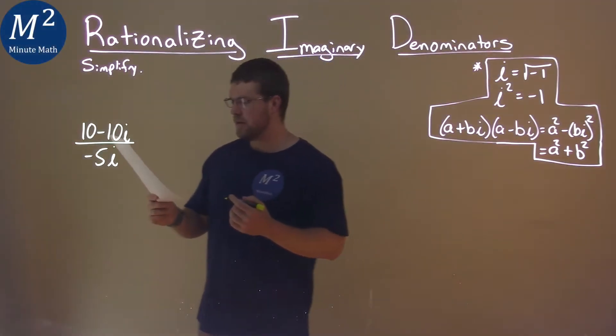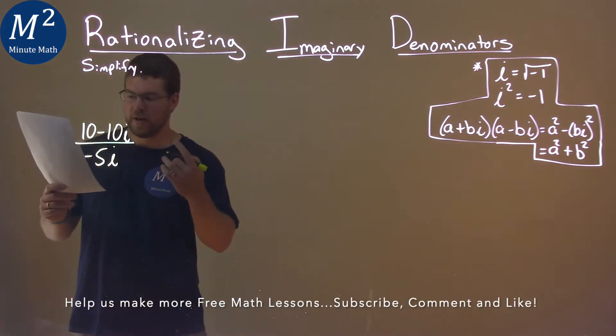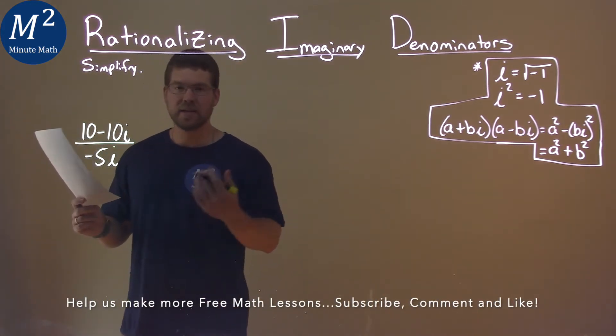We're given this problem right here, 10 minus 10i over negative 5i, and we've got to simplify.